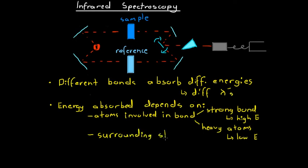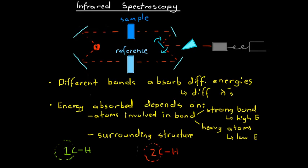If we have two different molecules that both contain a C–H bond, but one is surrounded by structure one and the other by structure two, these C–H bonds will absorb very similar amounts of energy because the bond is made up of the same atoms — both are carbon–hydrogen bonds. However, because they have different surrounding structures, the exact wavelength of infrared light they absorb will be slightly different, since their situation within the wider molecular context is a little bit different.